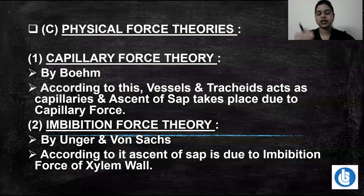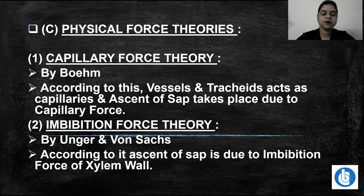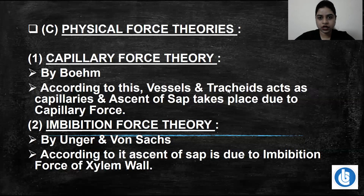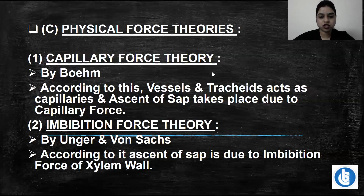Capillary water is present in a layer-wise manner inside the water molecules in the roots. The capillary force theory states that tracheids and vessels work like capillaries, which carry those water molecules through to the other plant parts. The force active here to reach water molecules to other parts is called capillary force.